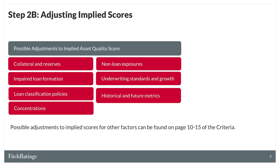As a next step, Fitch considers whether the implied scores should be adjusted. This slide shows the possible adjustment factors for asset quality.